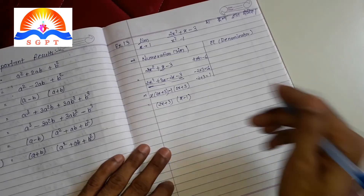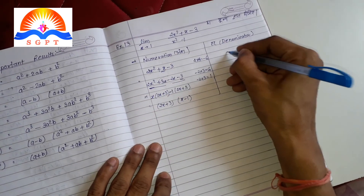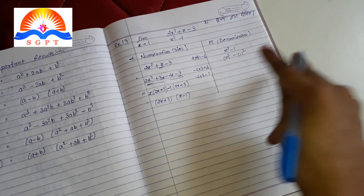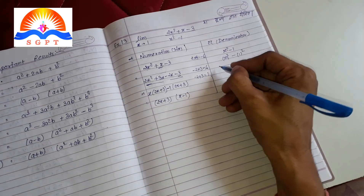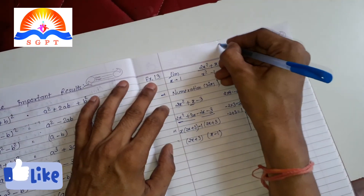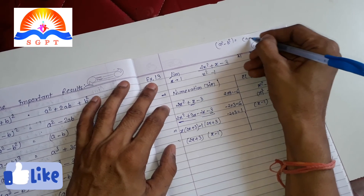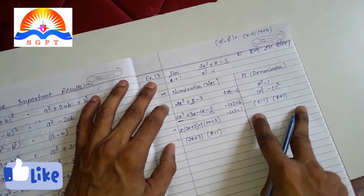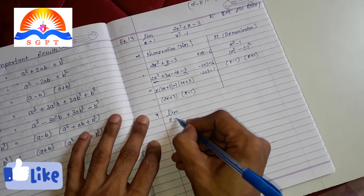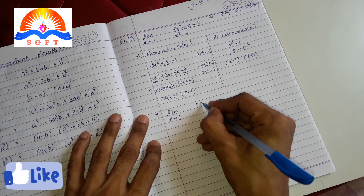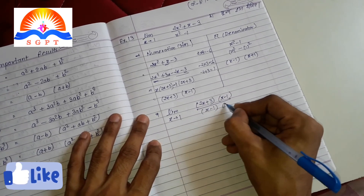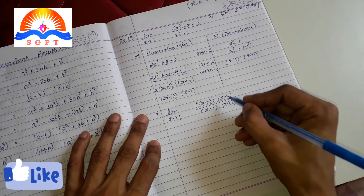अब denominator x square minus 1: यह x square minus 1 square है, तो यह a square minus b square = (a - b)(a + b) की formula use करेंगे। तो x square minus 1 = (x - 1)(x + 1). अब numerator (2x + 3)(x - 1) और denominator (x - 1)(x + 1) — (x - 1) cancel हो जाएगा।